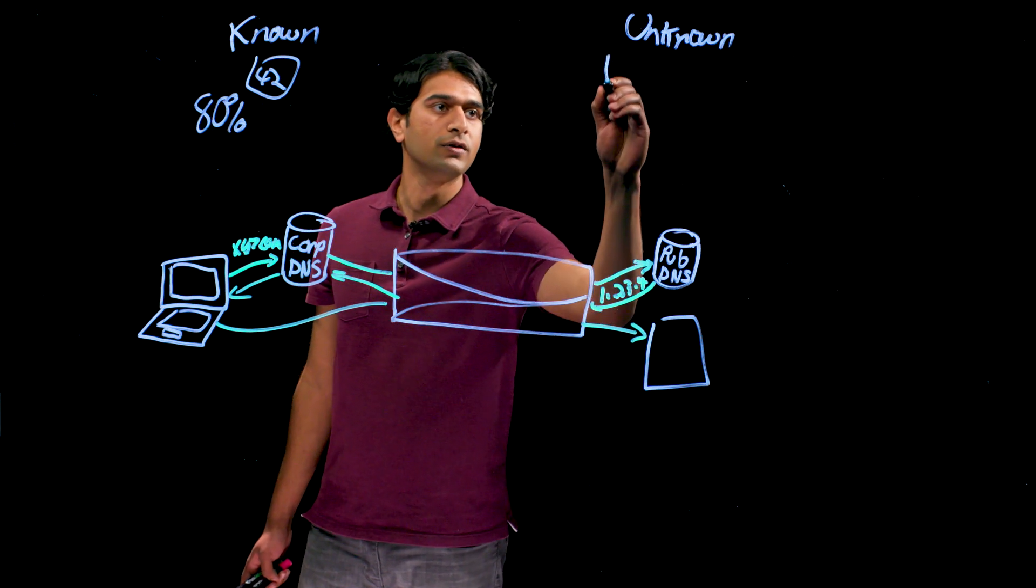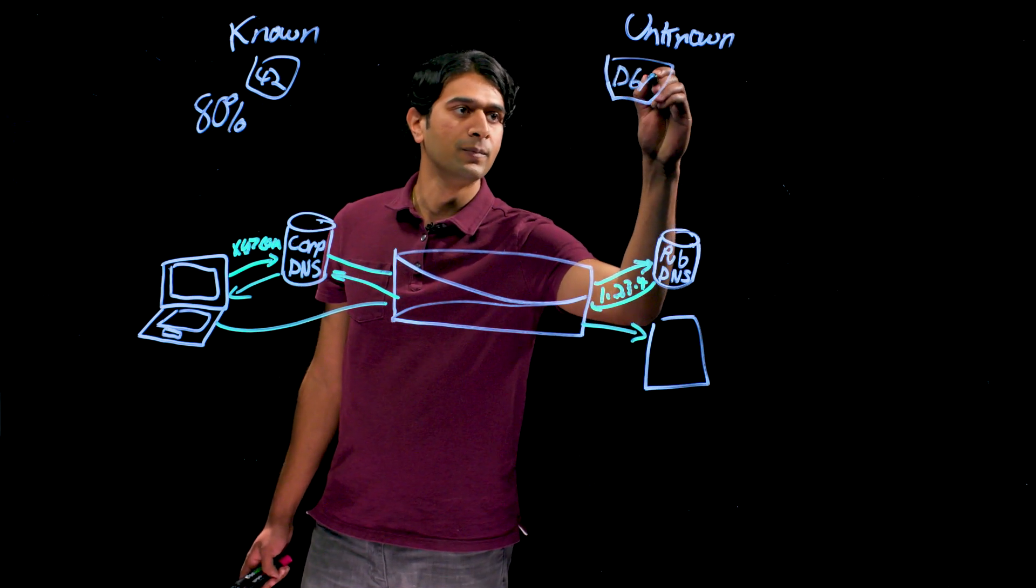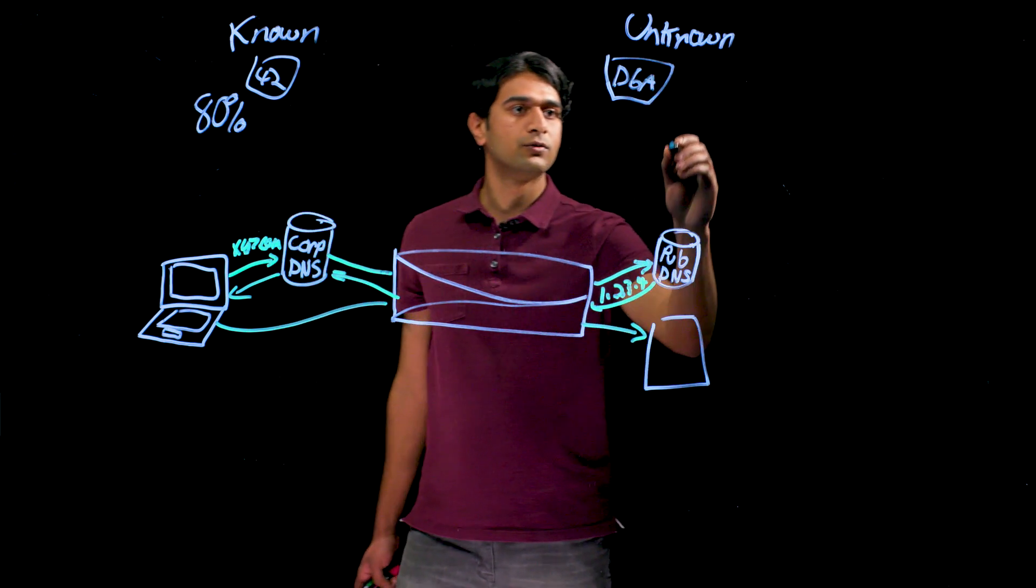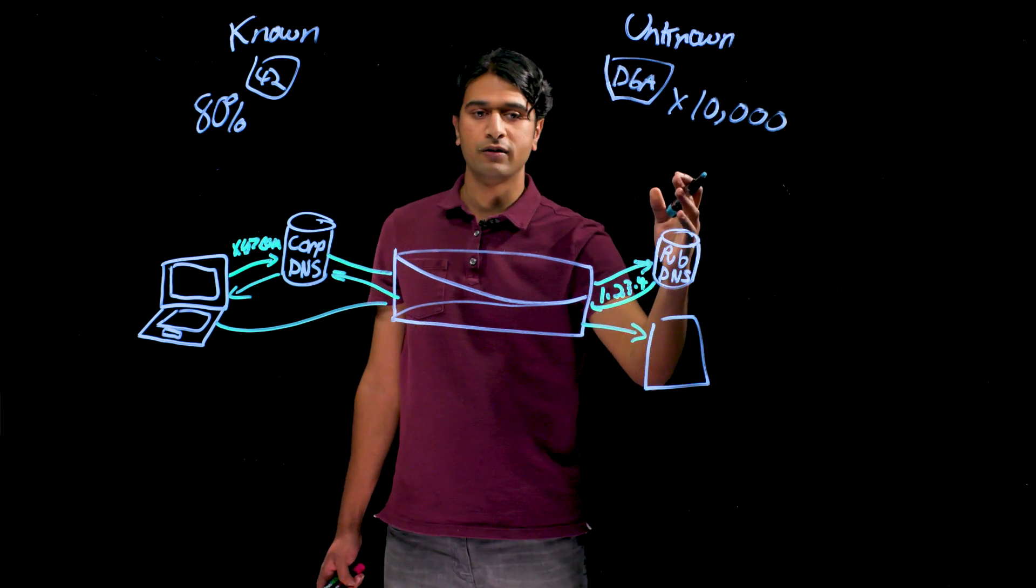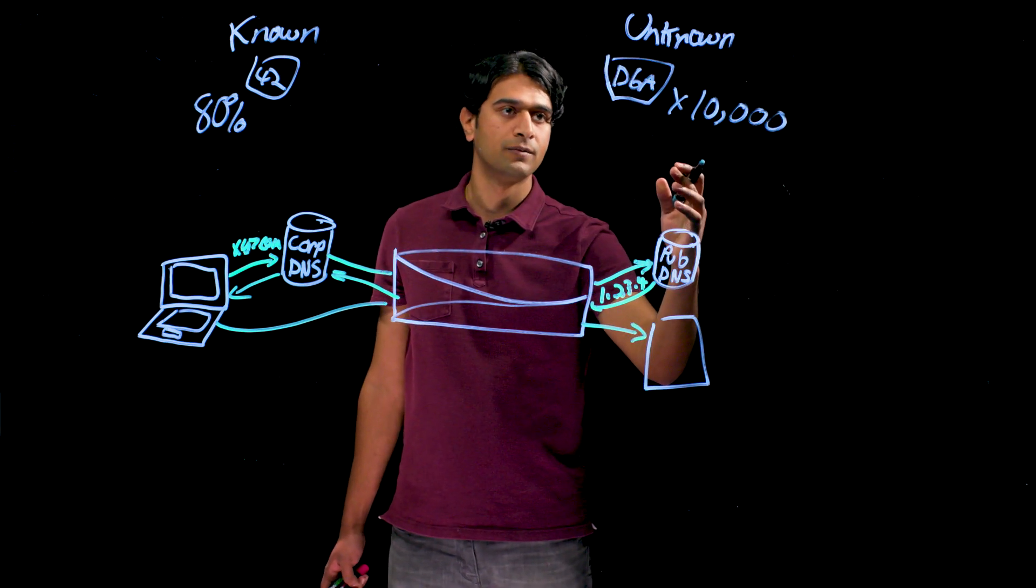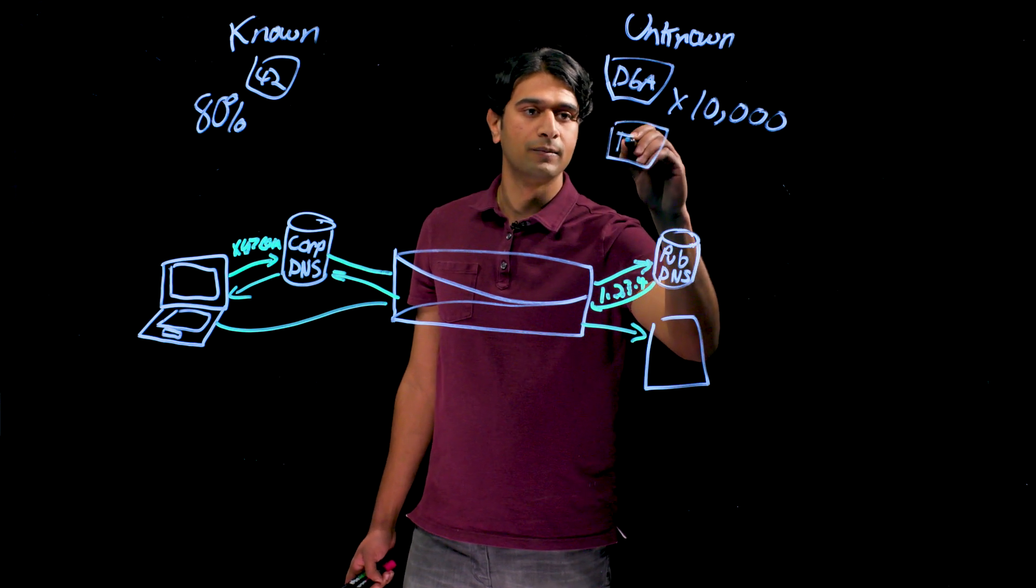These techniques, one of them is called domain generation algorithms or DGA, and this is when attackers will generate tens of thousands of domains each day and they only have to register one of them to establish the command and control channel. Another technique they use is something called DNS tunneling.